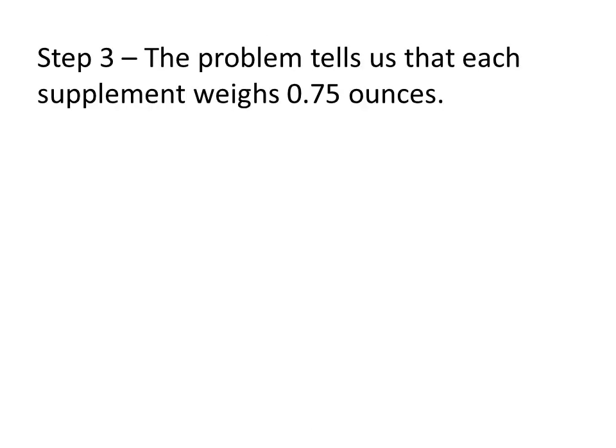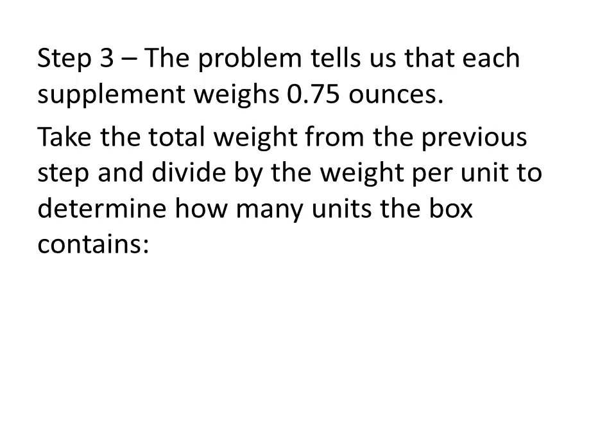For the third step, we need the weight of each of the units inside the box. The problem tells us that each supplement weighs 0.75 ounces. So, taking the total weight from the previous step, we divide by the weight per unit to determine how many units are in the box. 126 ounces total weight for the product divided by 0.75 ounces per unit gives us a result of 168 units.